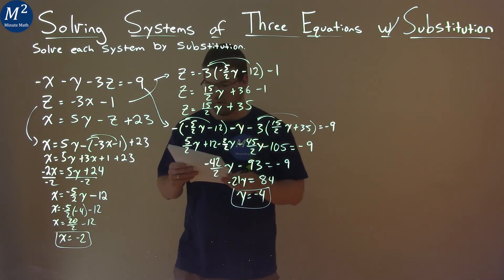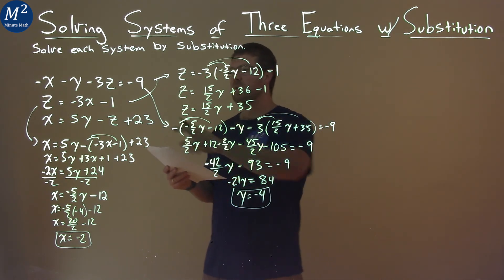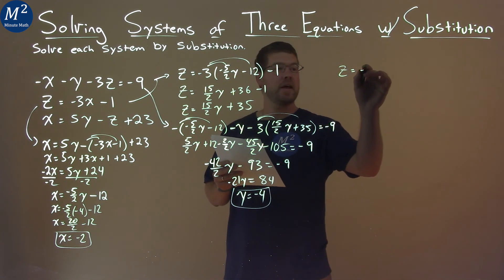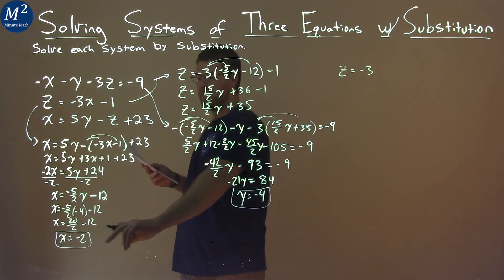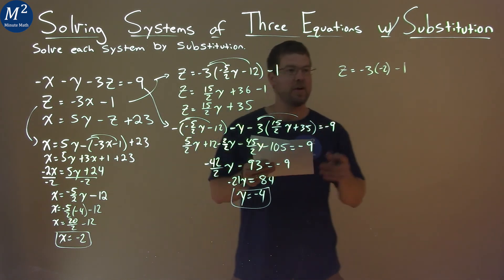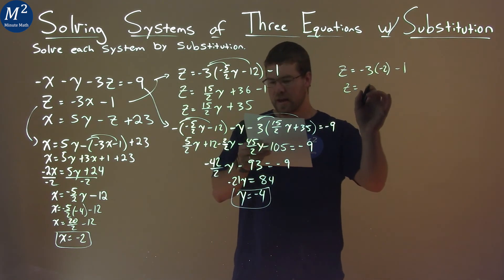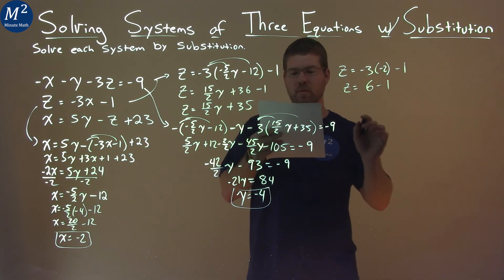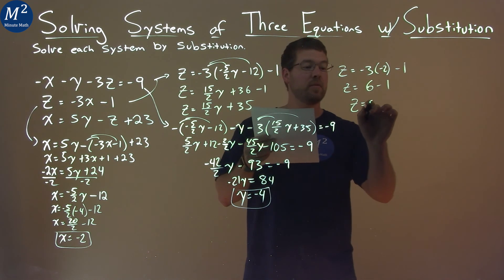So we have y, let's go find z. Well, z by itself is right here. So we have z equals negative 3, and we know what x equals now: negative 2 minus 1. Now we solve again for z. Simplify that out. Negative 3 times negative 2 is positive 6 minus 1, and z equals 5.